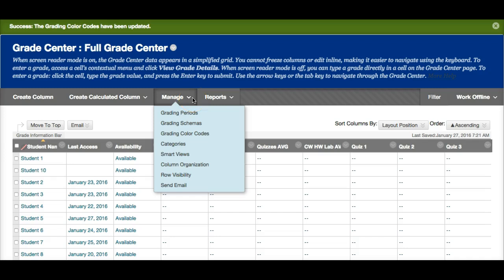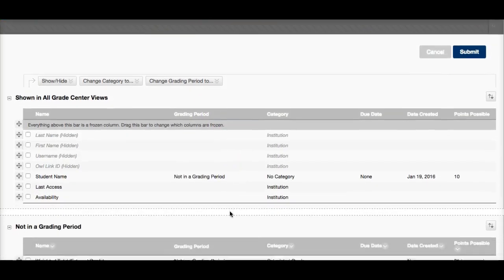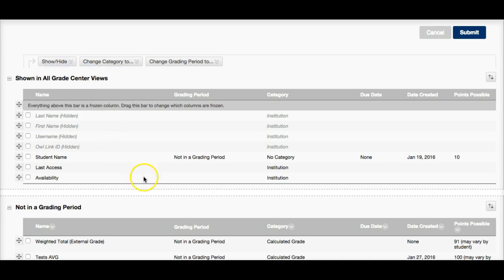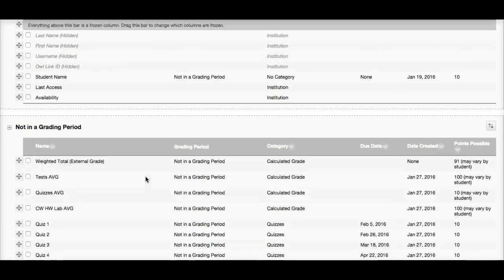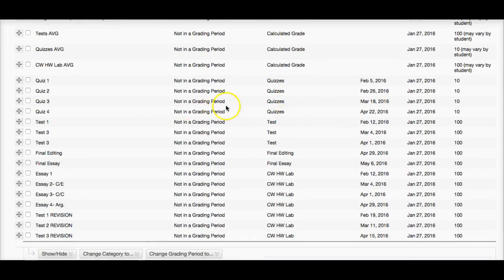To organize columns, you want to go to manage, go down to column organization. This is where you can show or hide selected columns. And you can go down and take a look. And you can see some of the calculated grades, test average column, quizzes average, classwork homework lab average. So these are calculated grades. Now here I want to make sure that each assignment has a category. So here we can see that everything is assigned a category. And I can just double check quizzes, tests, final editing, and these are all homework assignments.